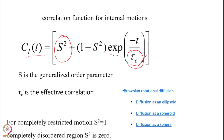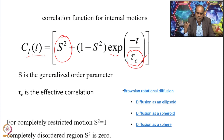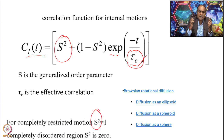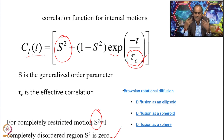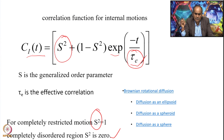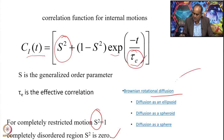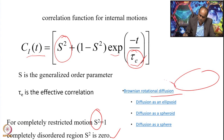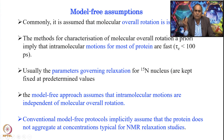S is called the generalized order parameter and τe is the effective correlation time. For completely restricted motion, S² equals 1; if completely disordered or flexible, S² equals 0. For any realistic case, S² varies between 0 and 1. In Lipari-Szabo, we consider Brownian rotational diffusion of a molecule in solution — the protein diffuses as an ellipsoid, spheroid, or sphere.